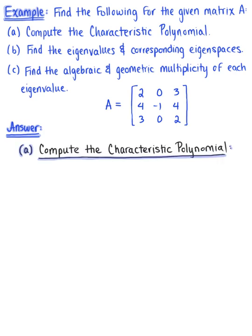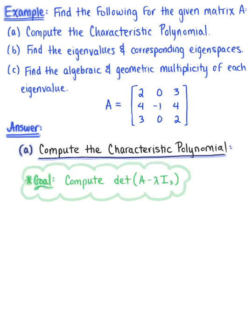In part A, we want to compute the characteristic polynomial. Our goal is to find the determinant of matrix A minus lambda times the 3 by 3 identity. The first thing that we need is this matrix A minus lambda times that 3 by 3 identity.